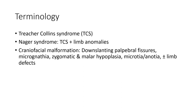Treacher Collins syndrome plus limb anomaly we call Nager syndrome. Treacher Collins syndrome is a kind of craniofacial dysostosis. That means downslanting, hypoplasia, micrognathia, zygomatic and mandibular hypoplasia, microtia, anotia, plus or minus limb disease.